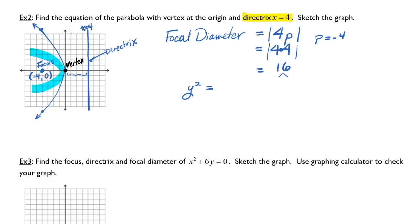Since it's an absolute value for the focal diameter, it's not a huge deal here, but it does matter when you're writing the equation for this parabola. You're going to have 4px. And we know that p in our case is negative 4. That gives me y squared is equal to 4 times negative 4 times x. So y squared is equal to negative 16x. And that is the equation of the parabola.